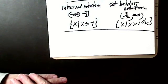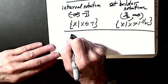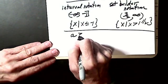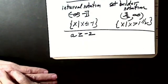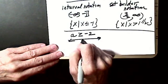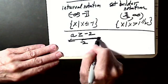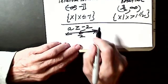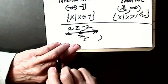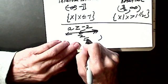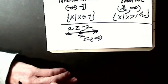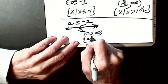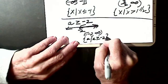Let's do the graph, interval notation, and set builder notation for a is greater than or equal to negative 2. I find negative 2 on the graph, greater goes this way, and since it has or equal, it's a bracket. For interval notation: bracket negative 2 to parenthesis infinity. For set builder: a such that a is greater than or equal to negative 2.